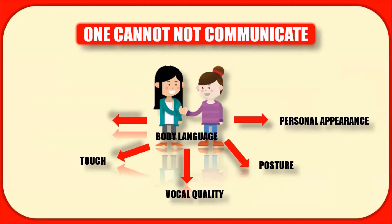Next is space — the distance between the sender and the receiver — which depends upon the relationship between them. If the sender and receiver share an intimate relationship, the space between them will naturally be reduced. This may not be the case when meeting a stranger or unknown people in a formal social setting, where the space between sender and receiver is increased.